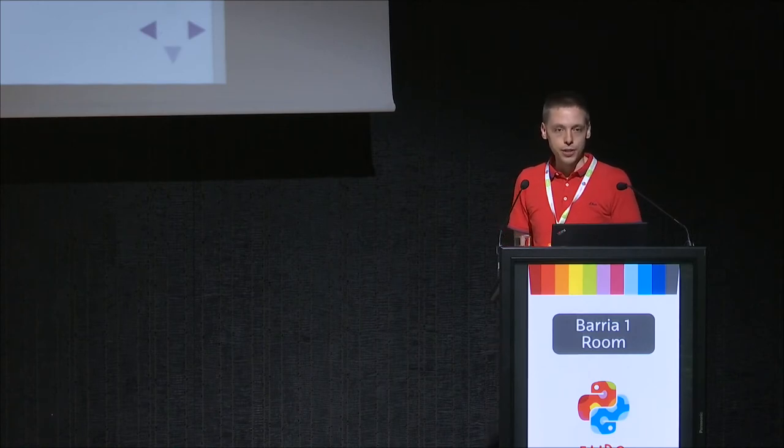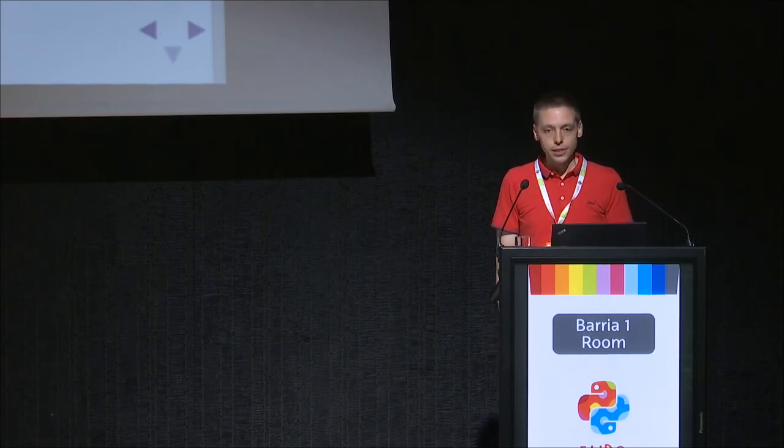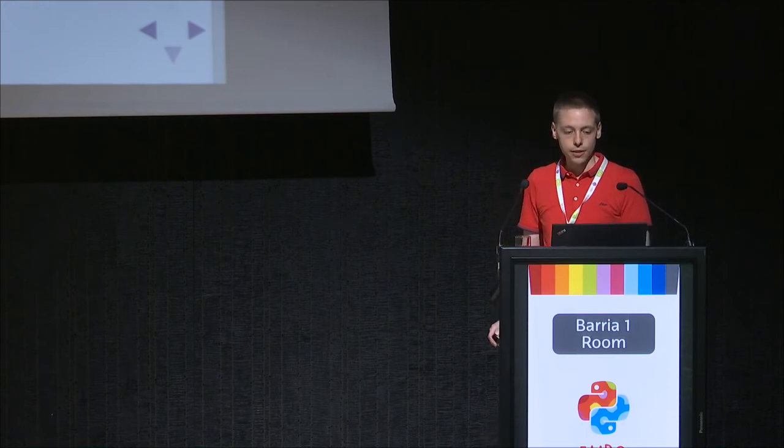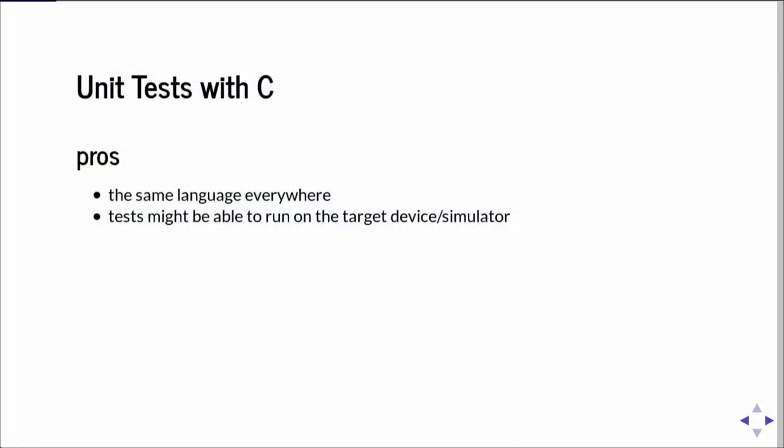Now let's look into that in a bit more detail. If you write unit tests for C code with C code, there are some good things: you've got the same language everywhere, so as a developer you do not need to switch context between different languages, different styles, different syntax. And it might also be good for a developer who only knows a single language. Also in an embedded environment you could run your unit tests on the target device or at least a simulated device, so you can test bits implemented in assembly as well.